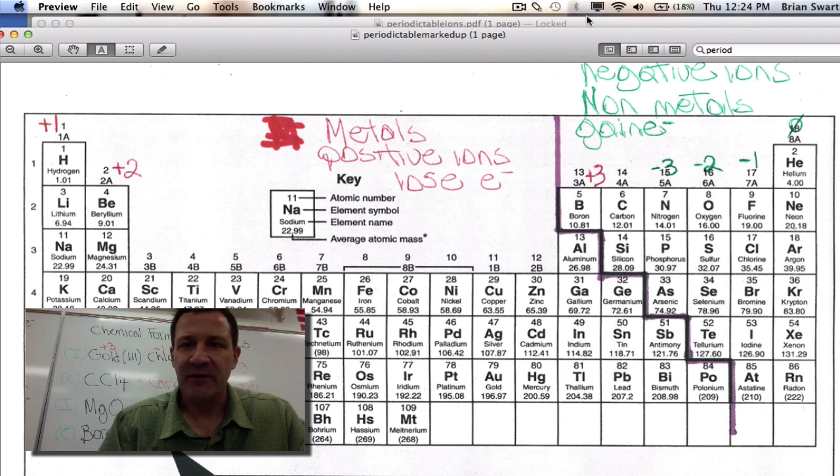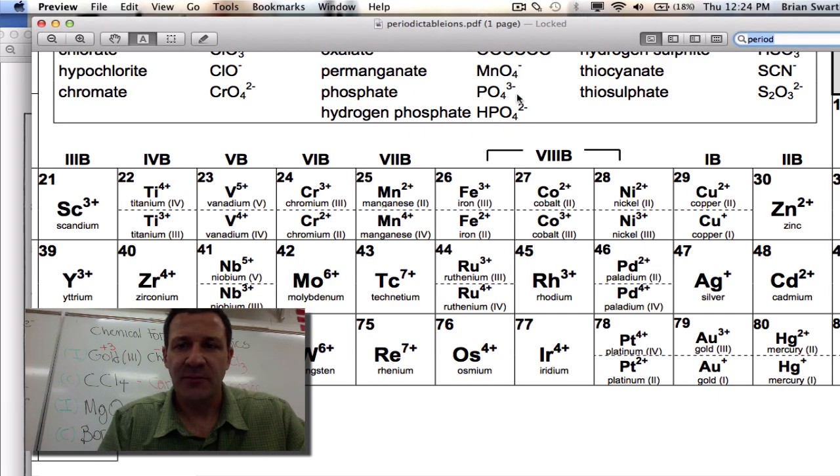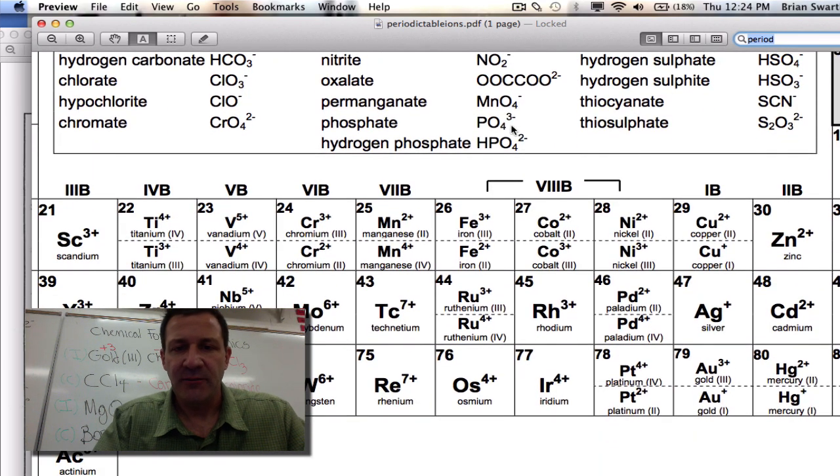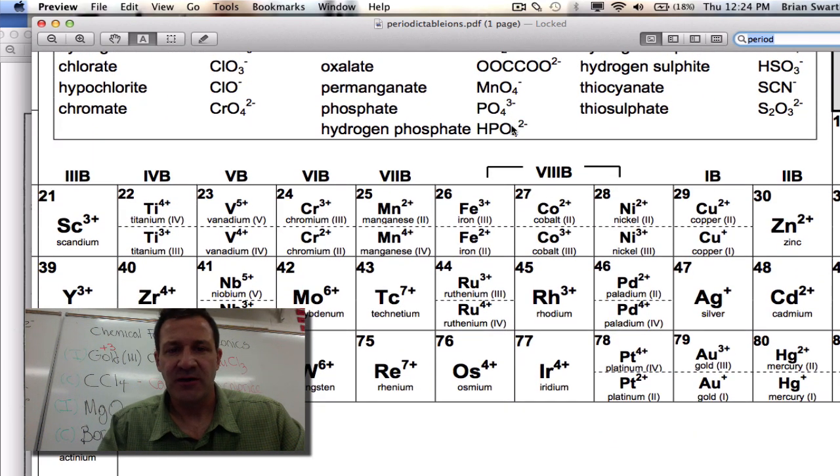The other thing you might want to have out is your ion periodic table. This is part of mine here. These are the common polyatomics with their names, their charges, and their chemical formulas. And then also in the middle of the periodic table, here we have our transition metals, which can form different charges based on their bonding conditions.